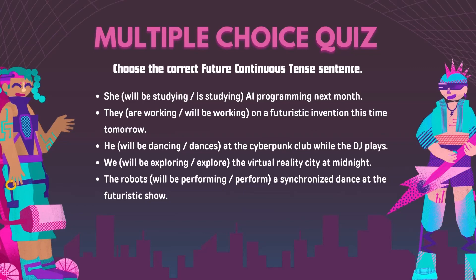Multiple choice quiz: Choose the correct Future Continuous Tense sentence. 1. She (will be studying / is studying) AI programming next month. 2. They (are working / will be working) on a futuristic invention this time tomorrow. 3. He (will be dancing / dances) at the cyberpunk club while the DJ plays. 4. We (will be exploring / explore) the virtual reality city at midnight. 5. The robots (will be performing / perform) a synchronized dance at the futuristic show.